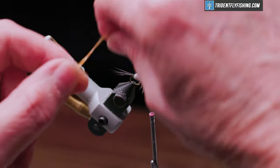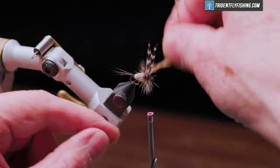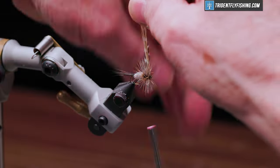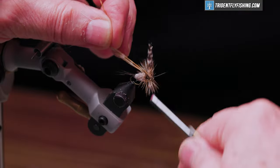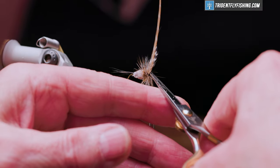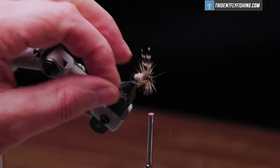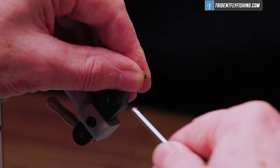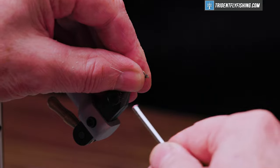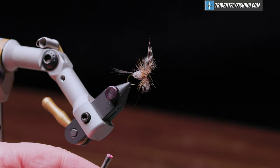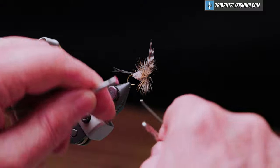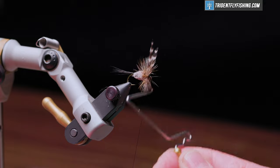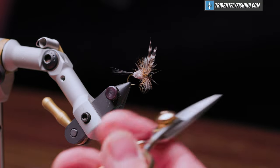And now the dark barred ginger. Cut off our excess. We'll sweep the hackle back out of the way, form a small head. Whip finish tool - make a four or five turn whip finish. Seat our knot, cut the thread.